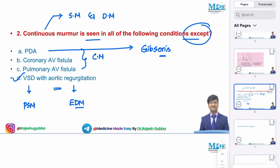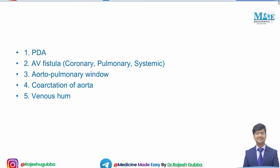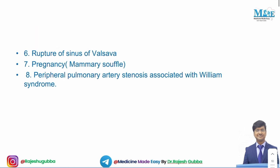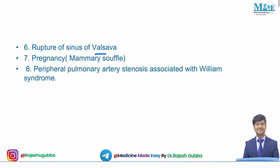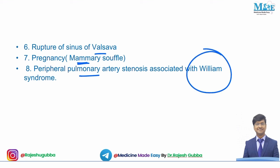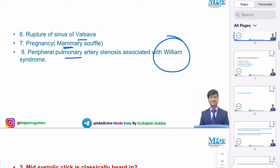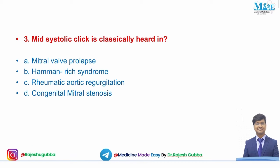Other conditions with continuous murmurs include: aortopulmonary window, coarctation of the aorta, venous hum in children, ruptured sinus of Valsalva, mammary souffle during pregnancy (a physiological murmur over the mammary gland), and peripheral pulmonary artery stenosis associated with Williams syndrome.